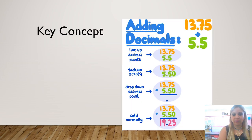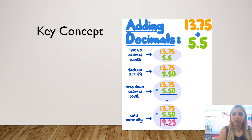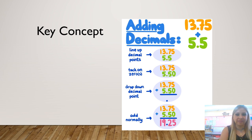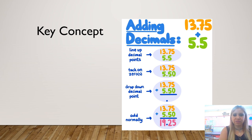This is our key concept — a summary of the steps we are going to use to add decimals. First, it's very important to line up the decimal points on top of each other, and in the answer too. Second, you have to track zeros: in the empty places you have to put zeros, which is really important to line up the digits. Third, drop down the decimal point, then add normally as you would do with whole numbers.